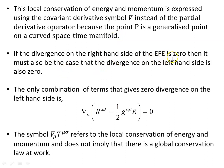This local conservation of energy and momentum is expressed using the covariant derivative symbol nabla, or del, instead of the partial derivative operator, because point P is a generalized point on a curved space-time manifold. It doesn't mean that energy and momentum are conserved globally across the whole manifold — that's not implied. It's just saying at that point P and for a small region around it, it's approximately conserved. If the divergence on the right-hand side of the Einstein field equation is zero, then the divergence on the left-hand side must also be zero.